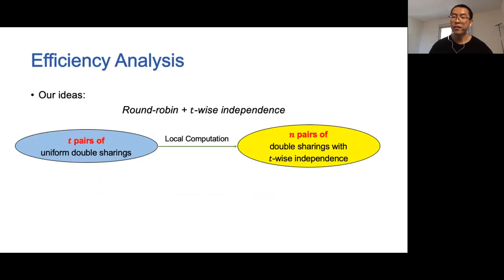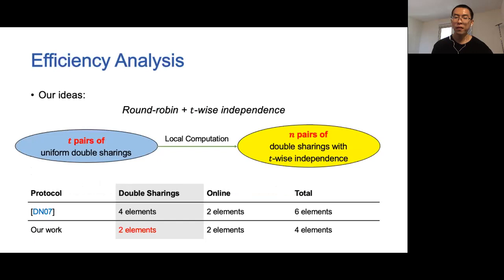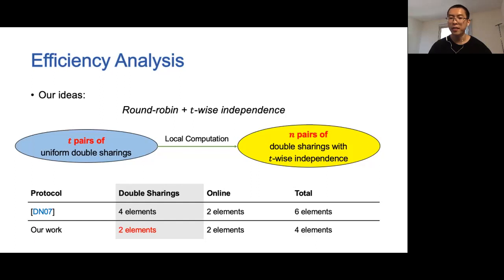In summary, our idea is to play the role of the first party in a round-robin way and rely on t-wise independence. We show that all parties can locally transform t pairs of uniform double sharings into n pairs with t-wise independence. Note that we do not need to change the original DM protocol, but just replace the double sharings used in the protocol. In the DM protocol, the amortized communication complexity per pair of double sharings is four elements per party. During the online phase, all parties need to send their shares of a degree-2t sharing to the first party and receive the reconstruction from the first party. Therefore, in the online phase, each party needs to communicate two elements per multiplication gate. In total, the DM protocol requires six elements per multiplication gate per party.